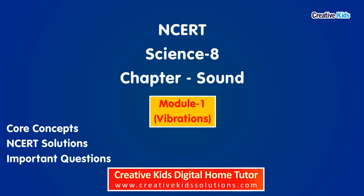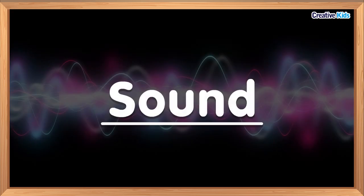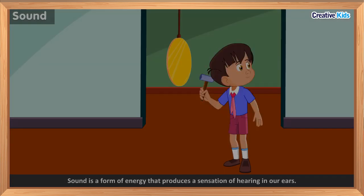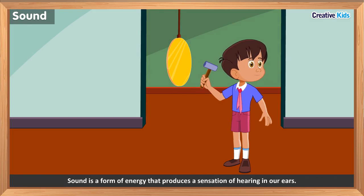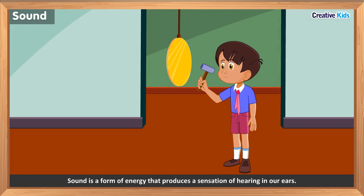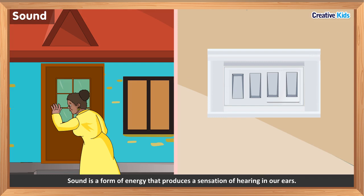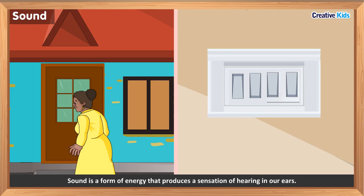Class eight, chapter Sound, module one: Vibrations. Hello friends, today we shall start chapter Sound of class eight. In this module we shall discuss what sound is and how it is produced. When you are in school, how do you get to know that the period is over? Obviously with the sound of a school bell. Similarly, you come to know that someone is at your door when he knocks or rings the bell.